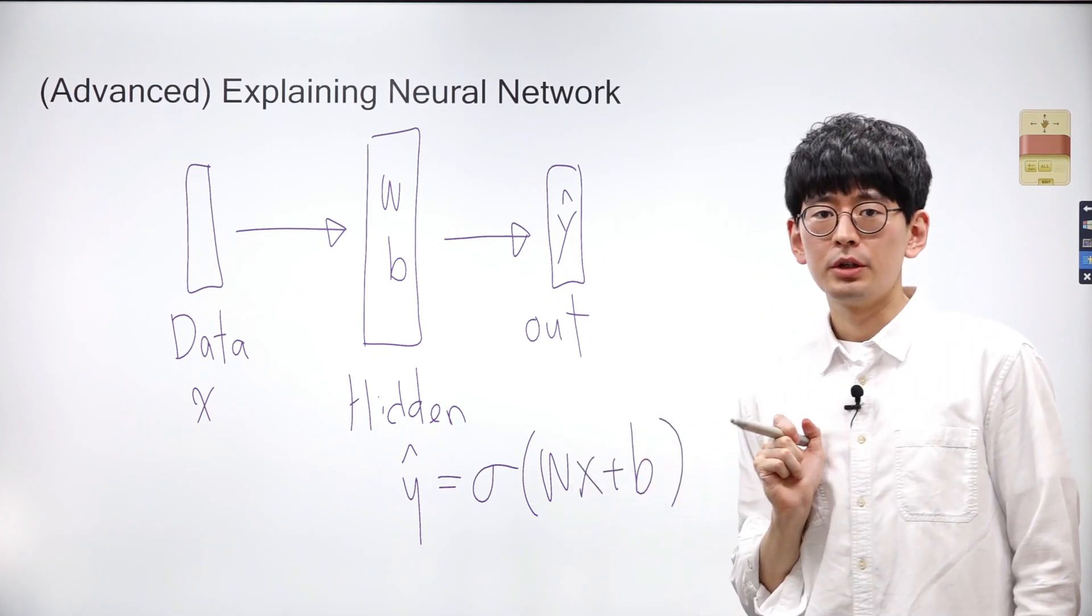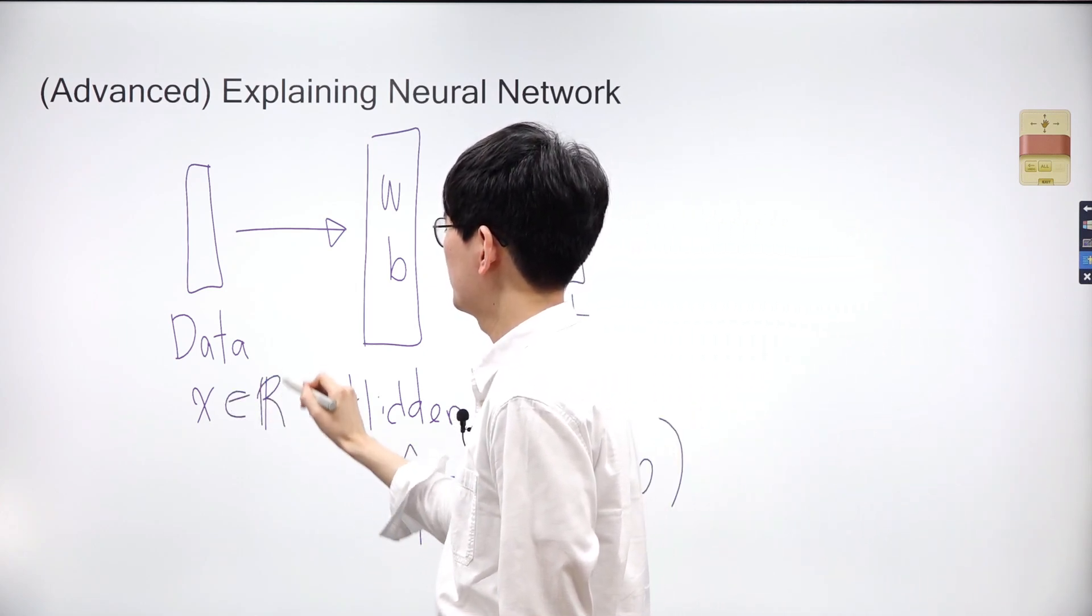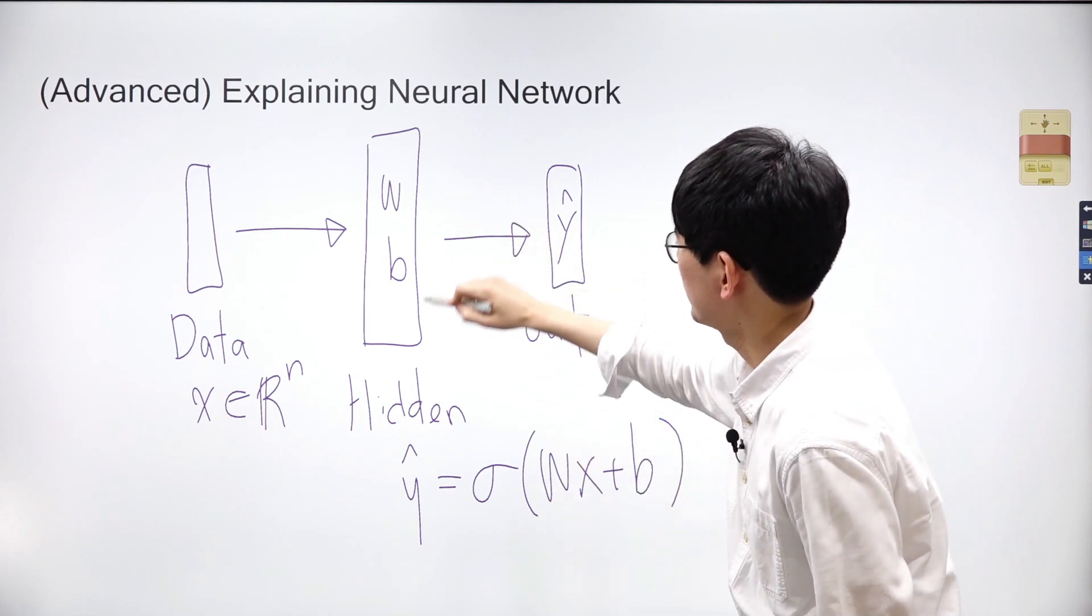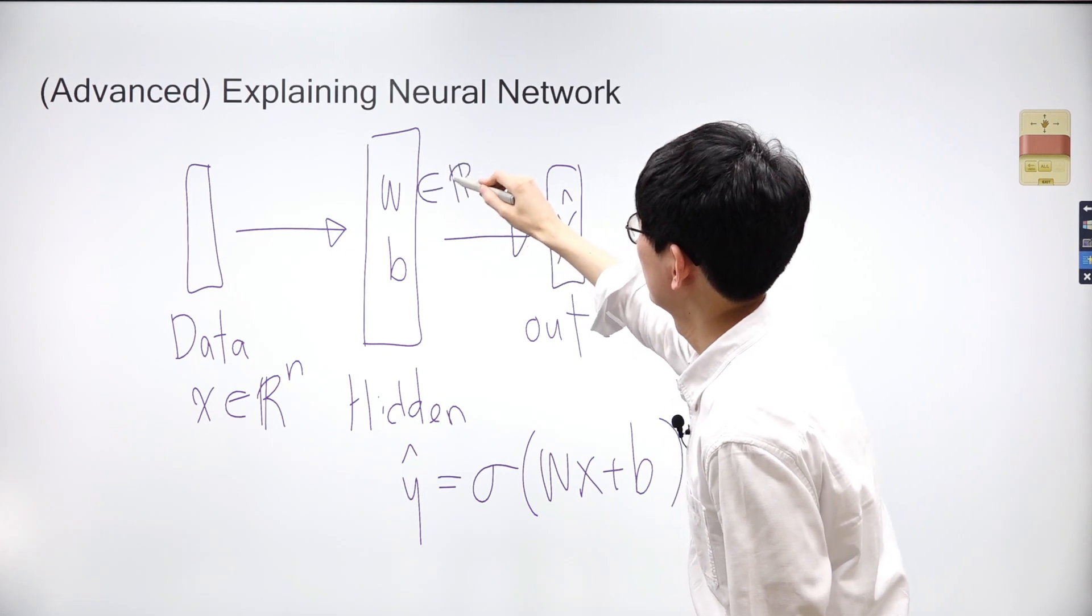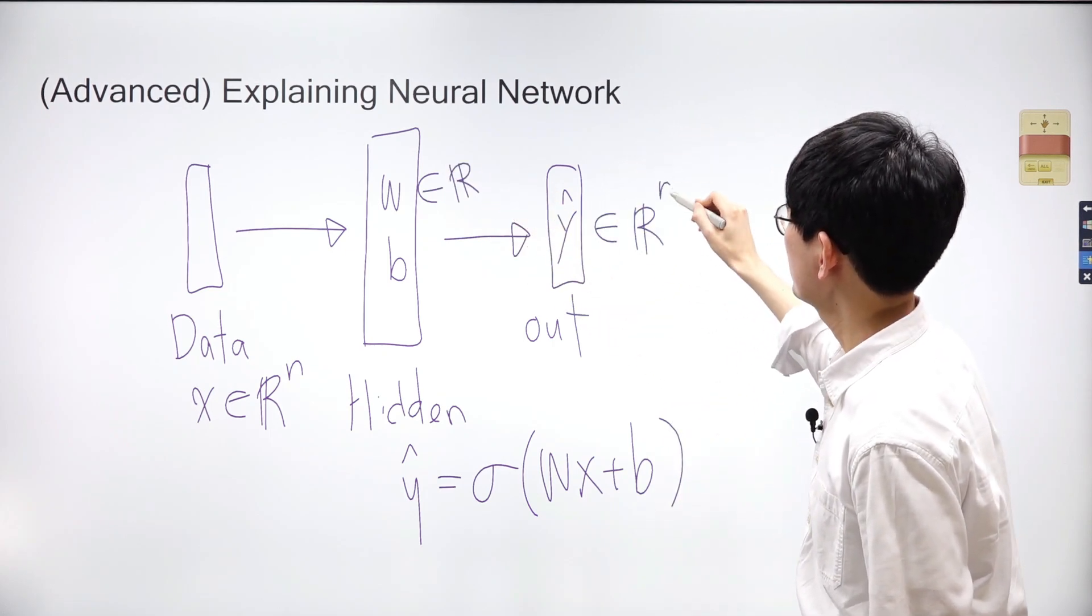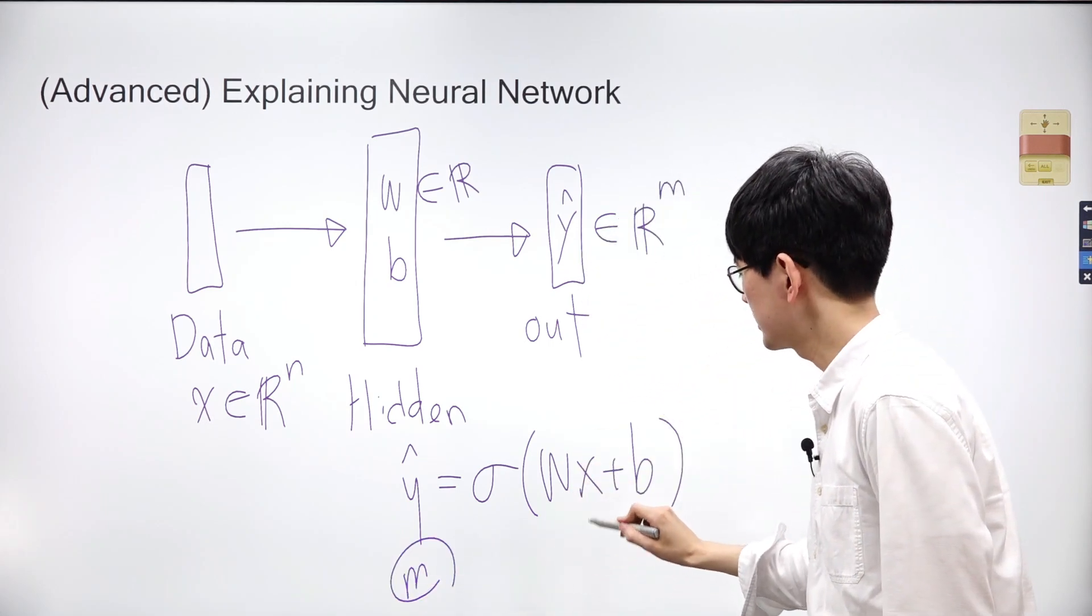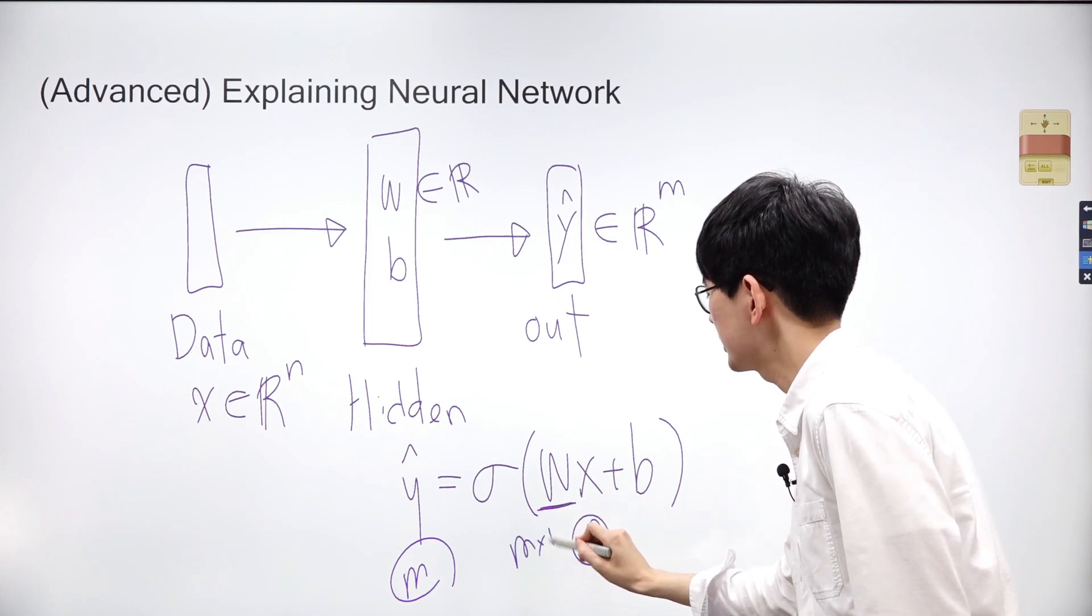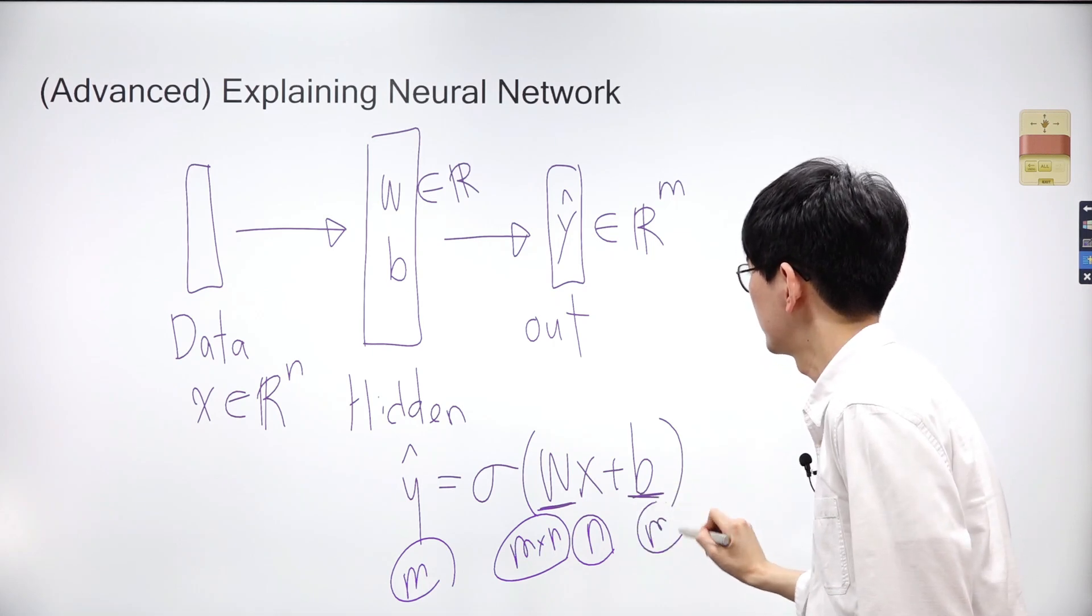Let's explore how multiplication between a matrix and a vector operates within this process. Let's say the data X is a vector in R^n. The weights and bias in the hidden layer also have their own dimensions. Consider that the weights take the form of a matrix. Suppose the output Y-hat is a vector in R^m. Since the dimensions of Y-hat and X are M and N respectively, the weights W must be an M by N matrix, and the bias must be a vector in R^m.